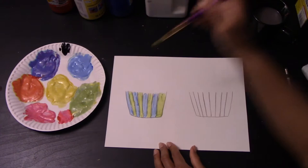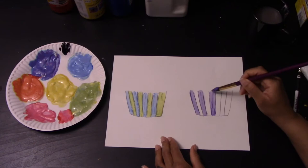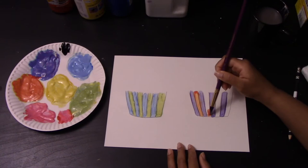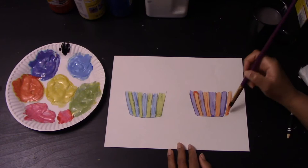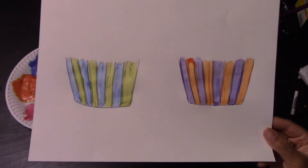When you complete this cupcake holder, you can go ahead and move on to the next. Next, you're going to create the same pattern, just using different colors. And they should look like this once we're done that part.